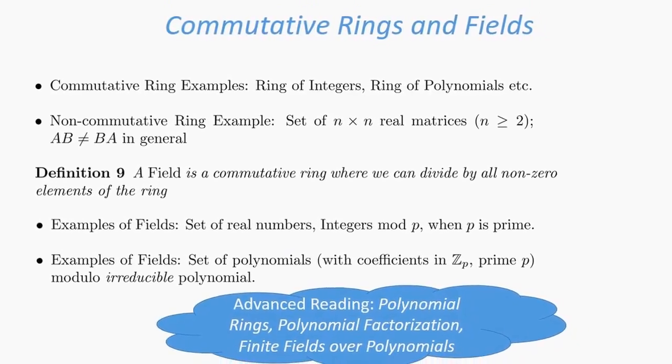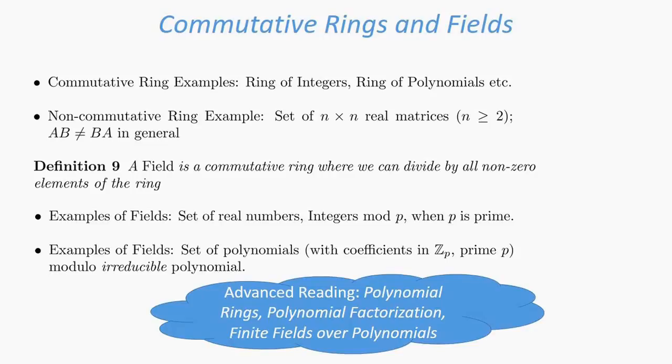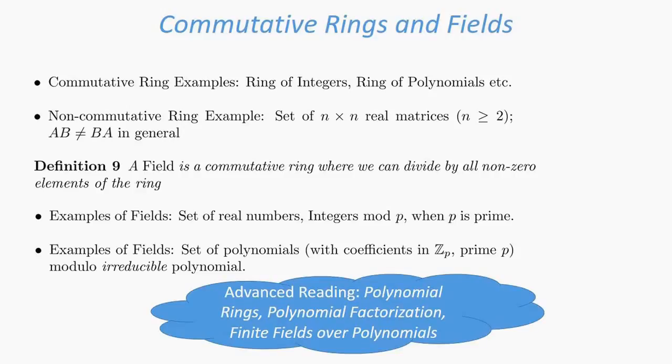Another example of fields is the set of polynomials with coefficients in ℤ_p, where p is prime, modulo an irreducible polynomial. Just like how when you do mod p where p is prime you get a field from a ring of integers, the ring of polynomials, when you do modulo an irreducible polynomial, gives us a field.